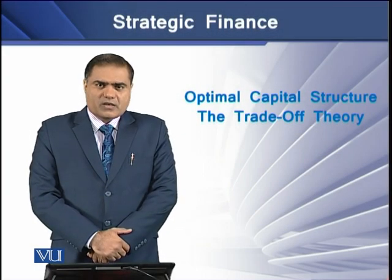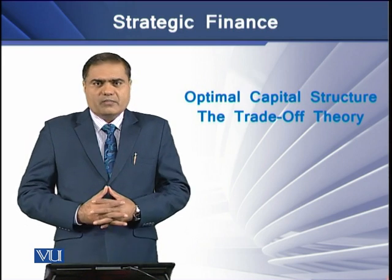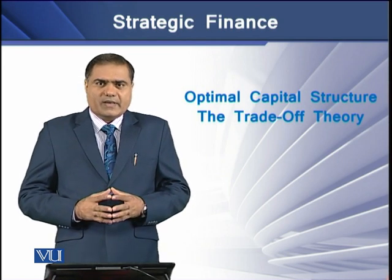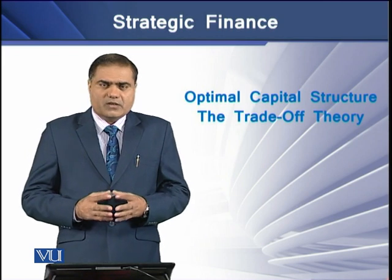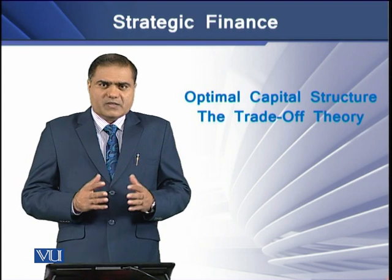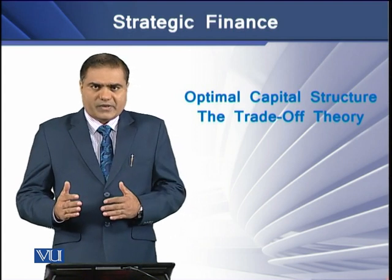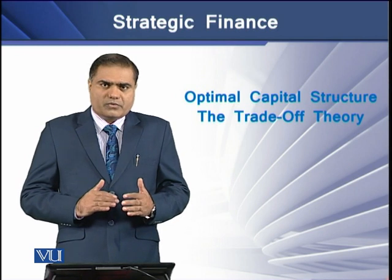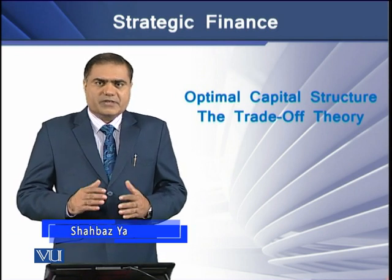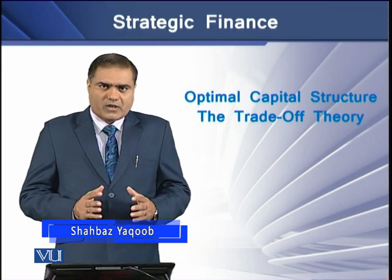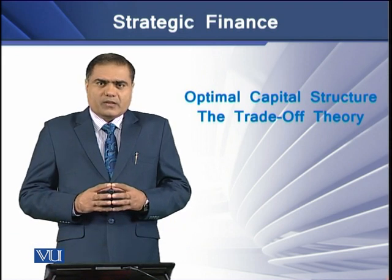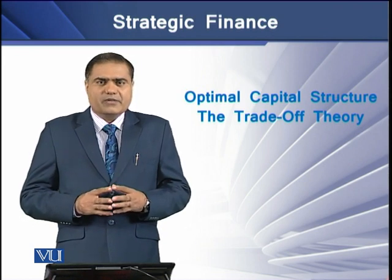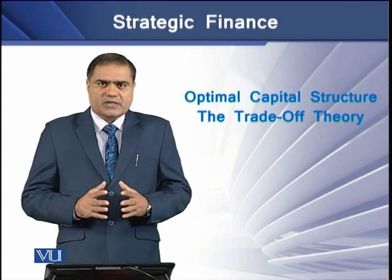Trade-off theory says that the value of a levered firm is equal to the value of an unlevered firm plus the present value of tax savings from debt, less the present value of financial distress cost. This means that leverage has both costs as well as benefits. It also means that leverage is an incentive for the firm to raise the amount of debt in order to exploit tax savings, but increasing debt can put a firm under the risk of default and the firm may need to incur certain financial distress cost.